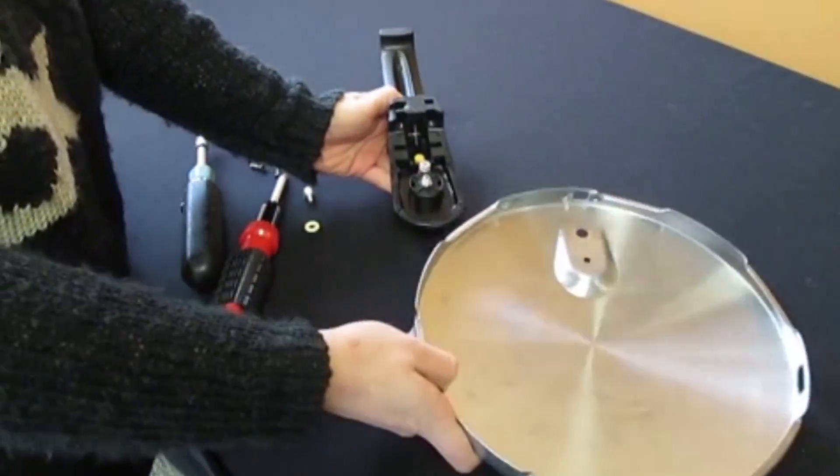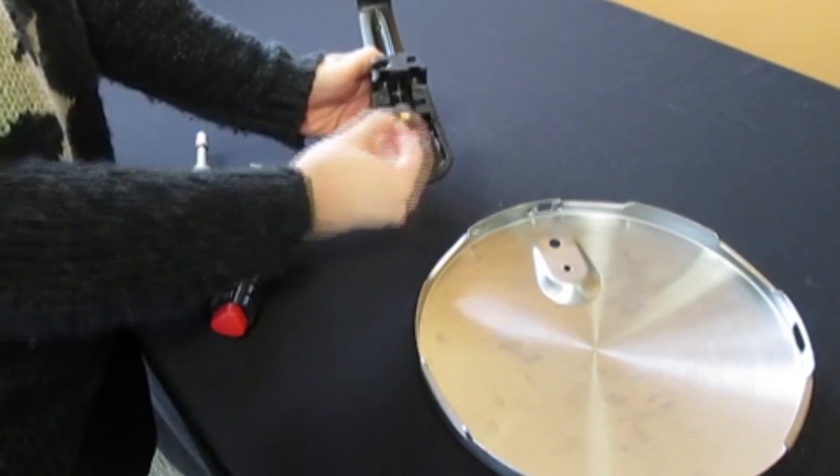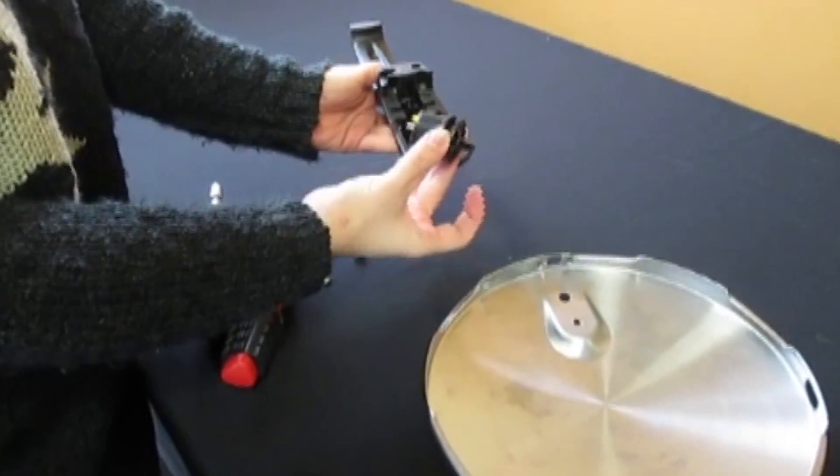You can now lift up the lid which will be detached from the handle. When you go to lift up the handle, the operating valve housing and rod should drop out.